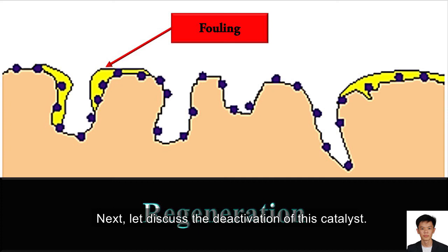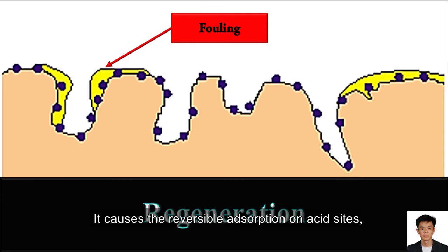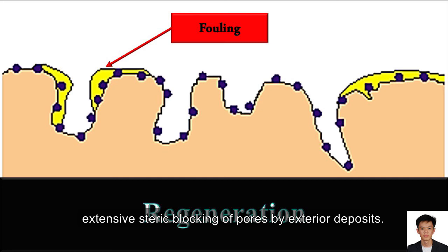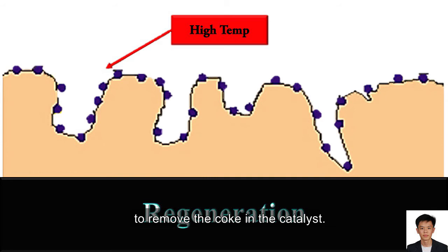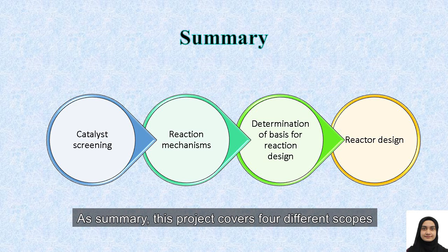Next, let's discuss the deactivation of this catalyst. Due to heavy aromatic deposits retained in the pores of the catalyst, the deactivation of catalyst is named as fouling. It causes irreversible adsorption on acid sites, irreversible adsorption on sites with partial blocking, partial steric blocking of the pores, and extensive steric blocking of pores by steric point deposits. Therefore, the regeneration process needs to be carried out to remove the coke in the catalyst. The loss in zeolite activity can be restored by regeneration done through thermal treatment — applying high temperature to remove the coke from inside the catalyst pores.